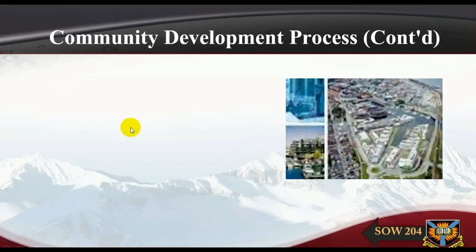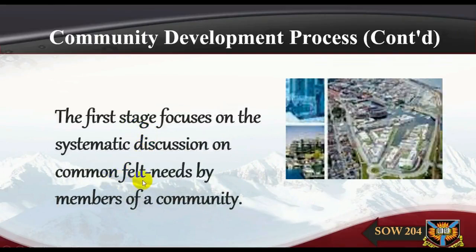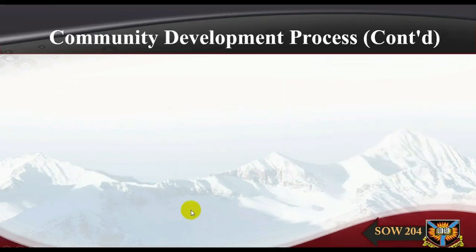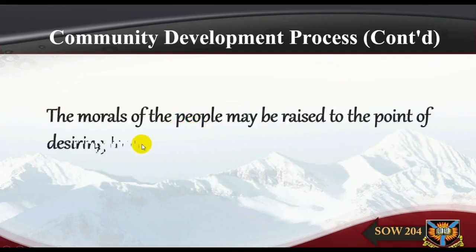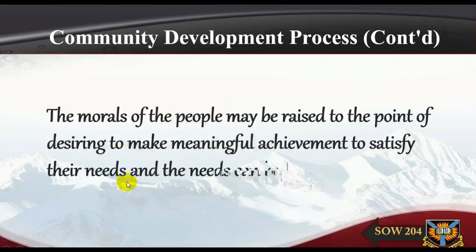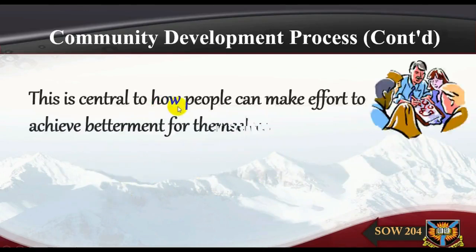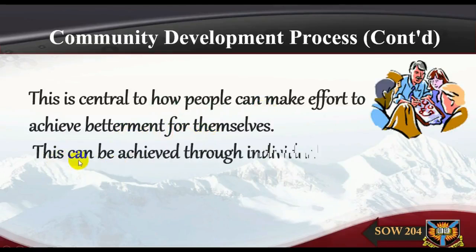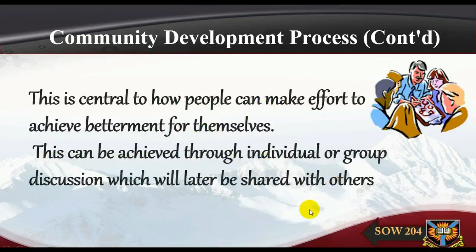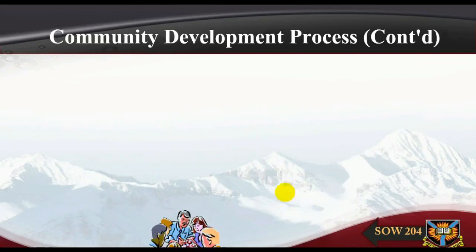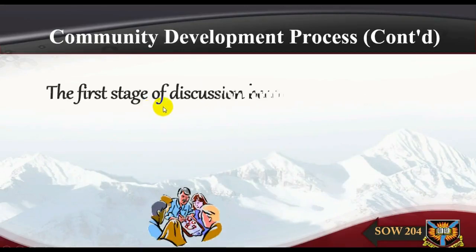The first stage focuses on systematic discussion of common felt needs by members of a community. The morale of the people may be raised to the point of desiring to make meaningful achievements to satisfy their needs, and these needs can be felt in the way people lead discussions. Discussion is therefore central to how people can make effort to achieve betterment for themselves. This can be achieved through individual or group discussion, which will later be shared with others.